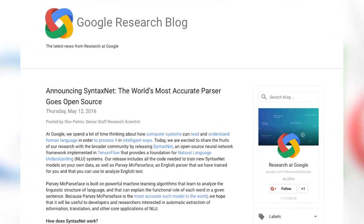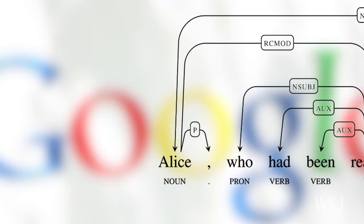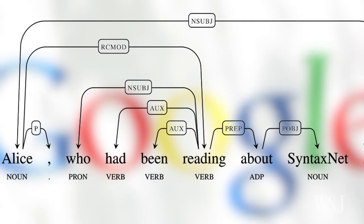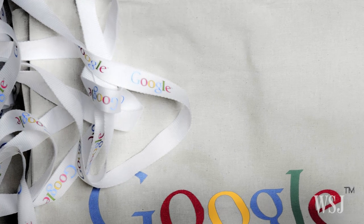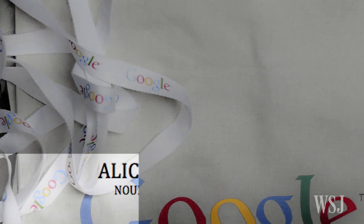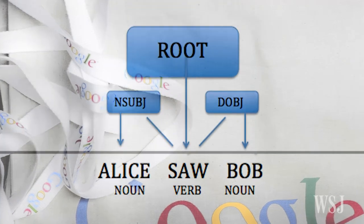SyntaxNet helps machines break down sentences into their component parts of speech and decodes the relationships between words and phrases. According to Google, its tool can correctly identify the various parts of a sentence, such as subjects, objects, verbs, etc., with up to 94% accuracy.